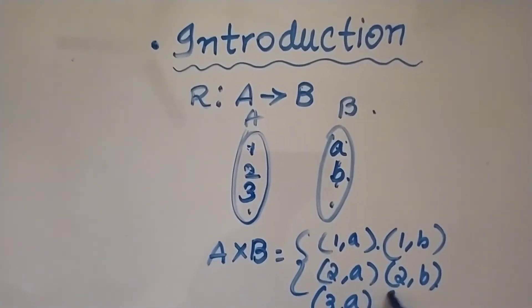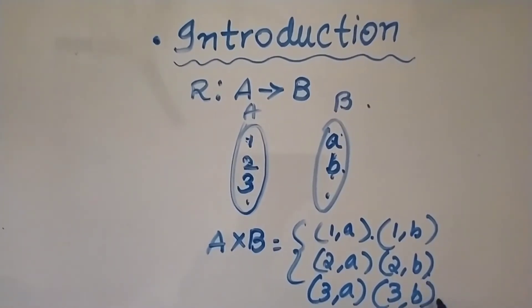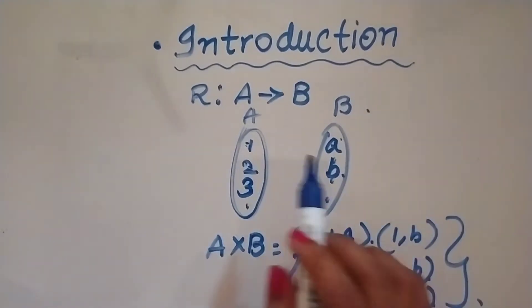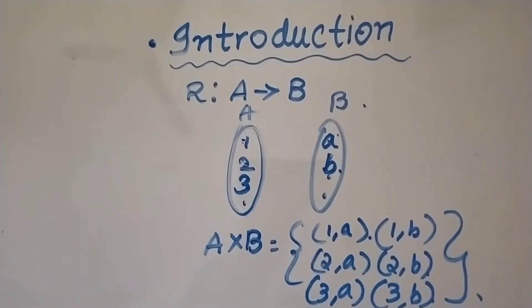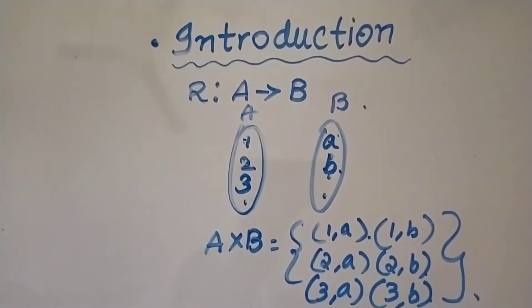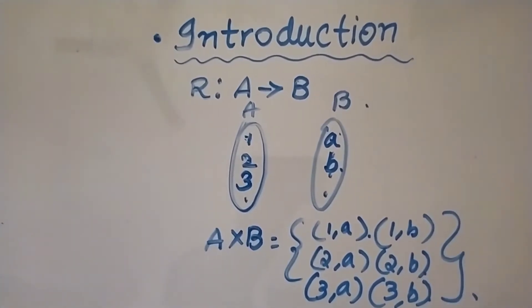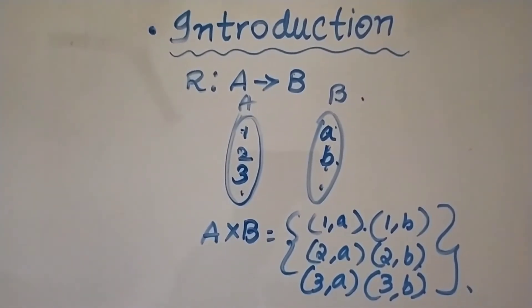Now this is the Cartesian product, right? Now what is relation? Relation is nothing but if I have to write, for example, the pairs with odd numbers.